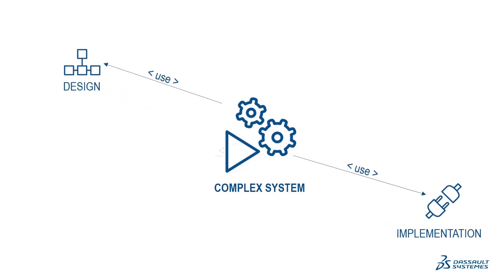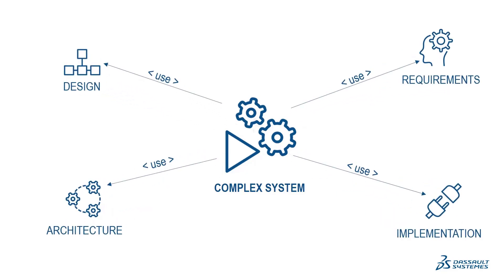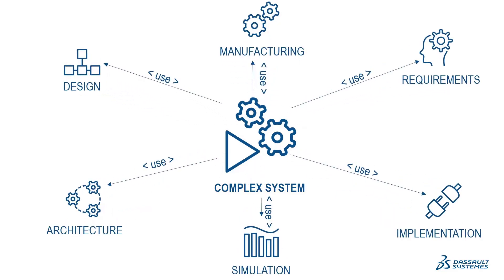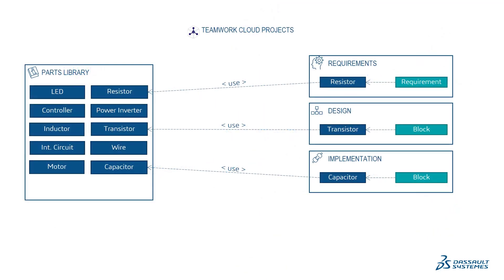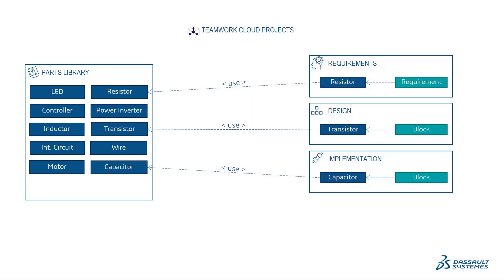When modeling, complex systems are usually decomposed into many subsystems and various libraries. Engineers and architects who work on those subsystems and libraries may not be familiar with all the projects that use them. Thus, deleting or refactoring elements may become an extremely difficult decision to make if you do not want to impact other projects by introducing broken elements.